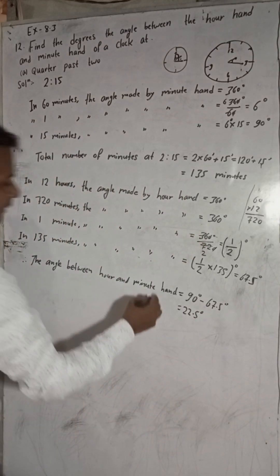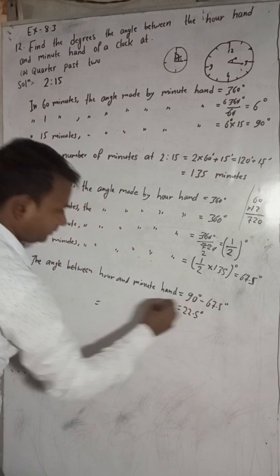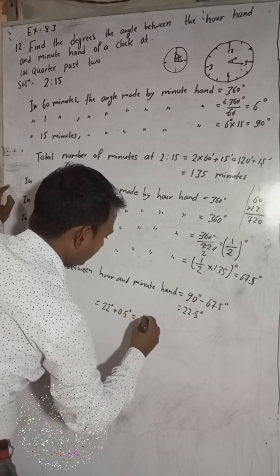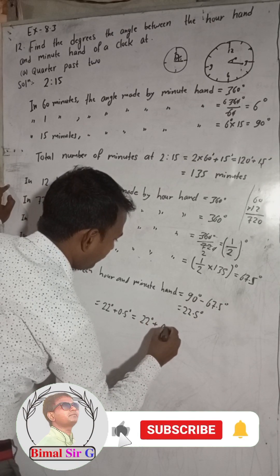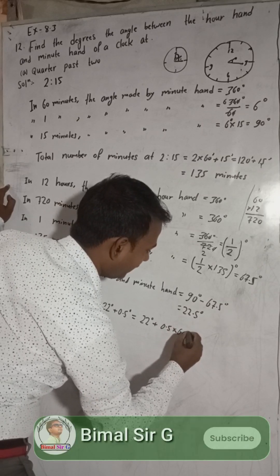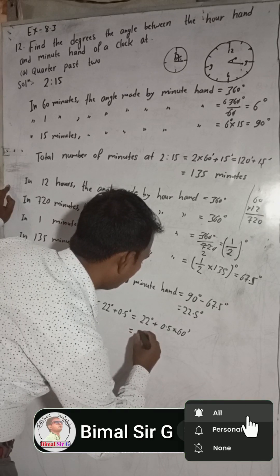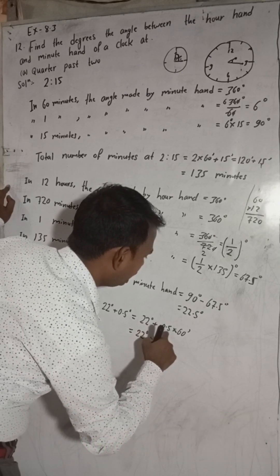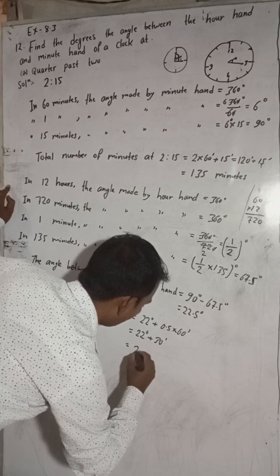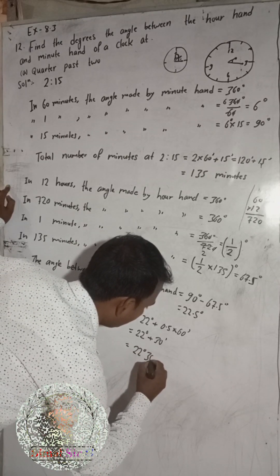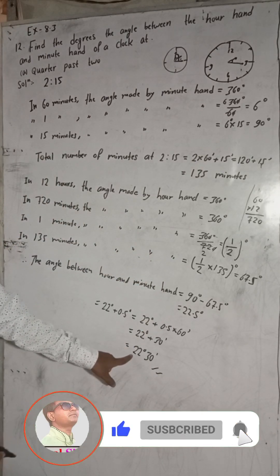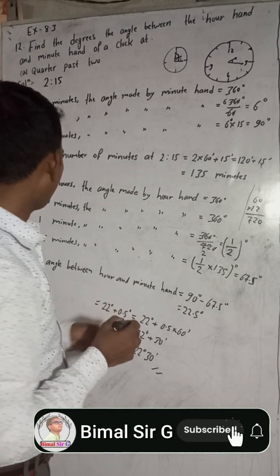Now, 22.5 degrees is equal to 22 degrees plus 0.5 degrees. Converting 0.5 degrees to minutes: 0.5 multiplied by 60 equals 30 minutes. So this is equal to 22 degrees and 30 minutes. The angle between the hour and the minute hand is equal to 22 degrees 30 minutes. This is our required solution.